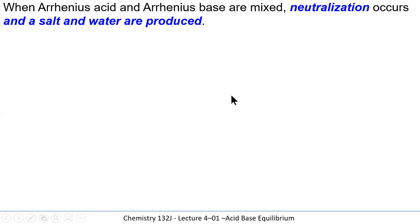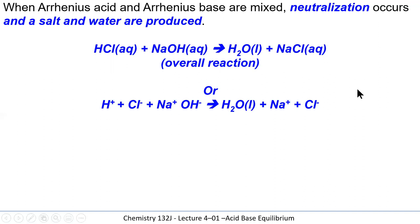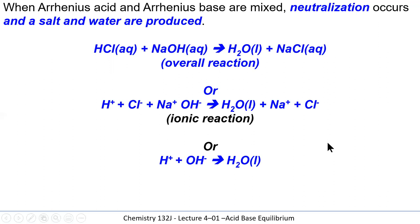When acids and bases are mixed together, Arrhenius suggested that neutralization occurs. If hydrogen chloride dissolved in water meets sodium hydroxide dissolved in water, they liberate hydrogen, chloride, sodium, and hydroxide ions. The hydrogen ions and hydroxide ions collide to make water molecules, while the sodium and chloride ions remain in solution as spectator ions. We can show the full ionic equation, identify the spectator ions, and use a net ionic equation to show only the ions combining to form water.